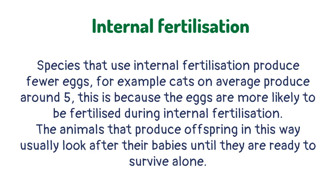Species that use internal fertilization produce fewer eggs. For example, cats on average produce around five. This is because the eggs are more likely to be fertilized during internal fertilization. The animals that produce offspring in this way usually look after their babies until they are ready to survive alone.